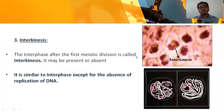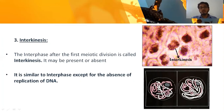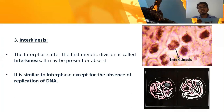The next phases belong to meiosis two. First is interkinesis, which is very short-lived. Normally after telophase, DNA duplication would occur during interphase, but in meiosis two DNA duplication never occurs. Sometimes even the interkinesis stage is not present and the cell immediately enters the prophase two stage.